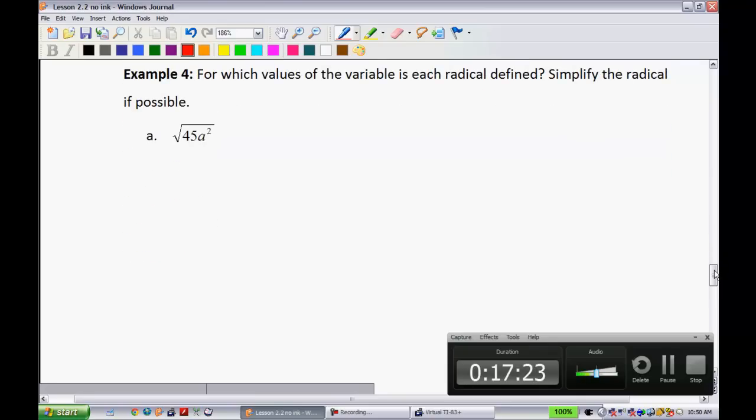So we're going to see some variables now that we can simplify with. I think you'll kind of like these. For which values of the variable is each radical defined? And then they also want you to simplify them. Let's start.